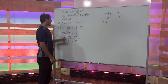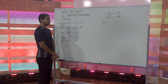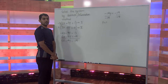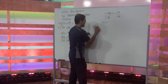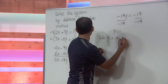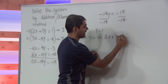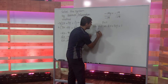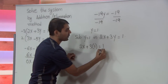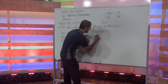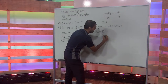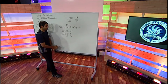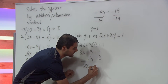We want to find the value of x by substituting y equals 1 into either equation 1 or equation 2. For convenience, let's choose equation 1. Substituting y equals 1 into 2x plus 3y equals 1, we get 2x plus 3 times 1 equals 1. Simplifying the left-hand side, we get 2x plus 3 equals 1. Now, isolating 2x on the left-hand side, we subtract 3 from both sides, giving us 2x equals negative 2.